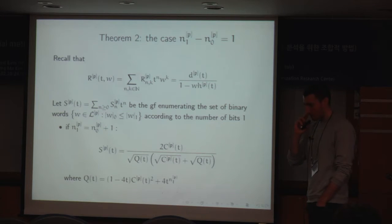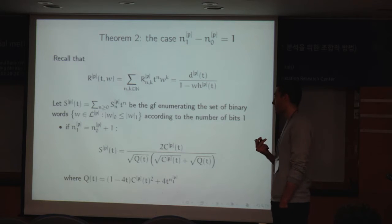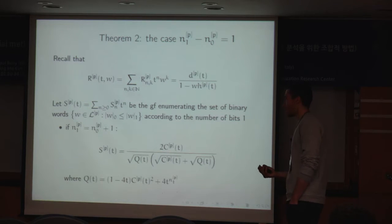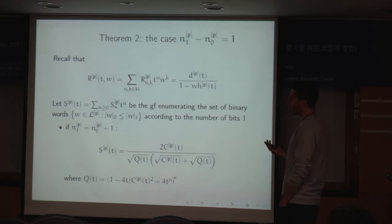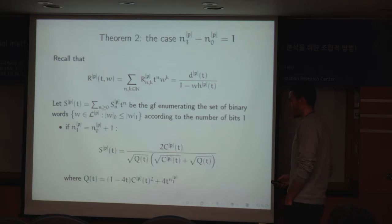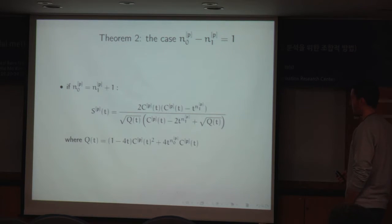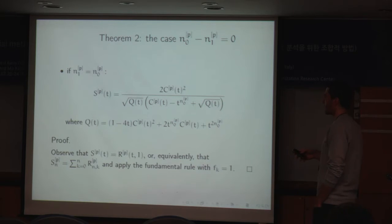We study two new generating functions. The first, S, enumerates the set of binary words avoiding pattern P where the number of bits 0 cannot exceed the number of bits 1. As before, we state this theorem according to the cases on the difference between the total number of bits 1 and 0 in the pattern. When there is one more bit 1, we have this explicit definition for function S. When there is one more bit 0 with respect to the number of bits 1, we have this explicit definition. And finally, when there are the same number of bits 0 and 1 in the pattern, we have this definition.